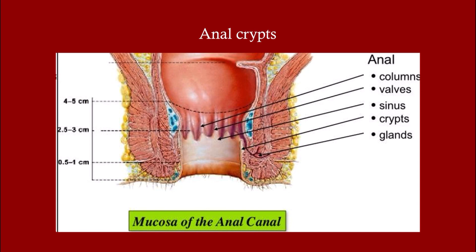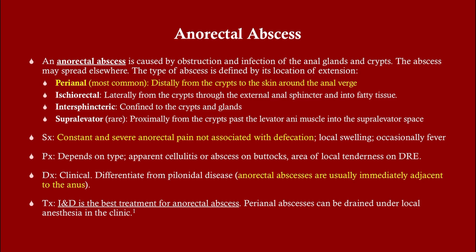The anorectal abscess is caused by obstruction and infection of the anal glands and crypts. The abscess can spread contiguously and is defined by its location of extension. The perianal abscess is the most common and the one most likely to appear on your exam. Symptoms include constant severe pain with surrounding erythema — it's red, swollen, and hot. Occasionally patients develop fever and signs of generalized inflammation.